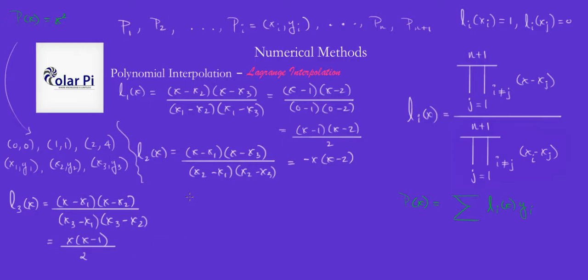So, moment of truth. P of X, according to what we wrote here, is supposed to be L1 times Y1 plus L2 times Y2 plus L3 times Y3.